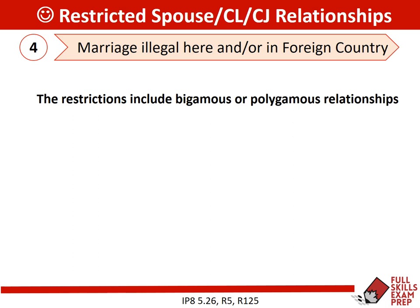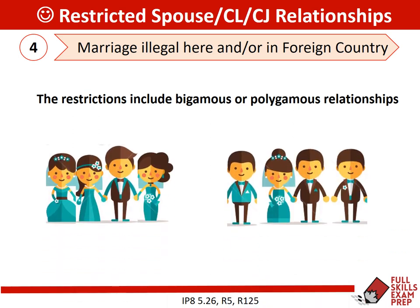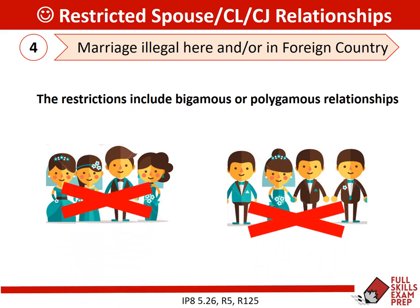On the contrary, a marriage that is legal in another country but is not legal here in Canada would be ineligible for sponsorship. This includes bigamous and polygamous relationships — someone marrying multiple people is illegal in Canada, so the person would not be able to sponsor those partners.